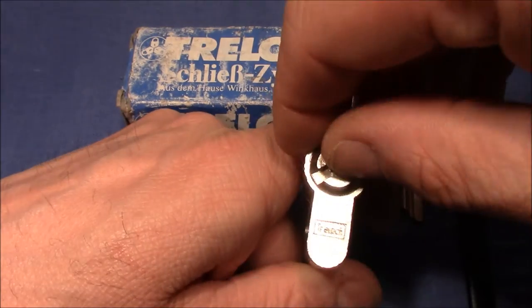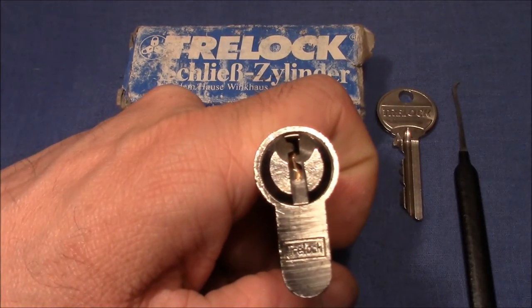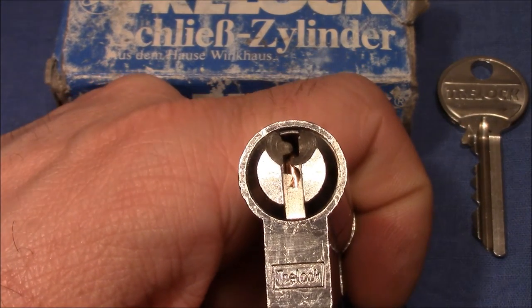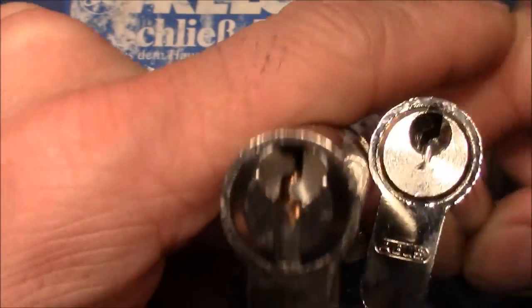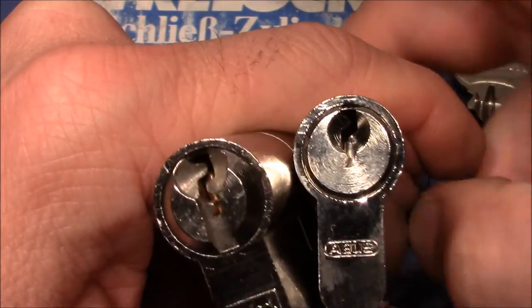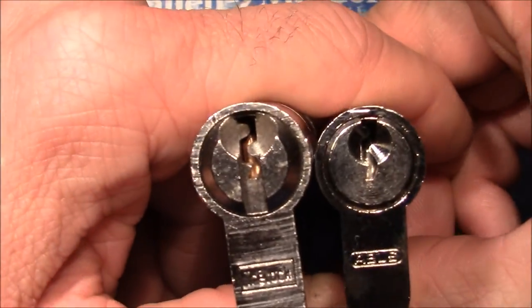So let's lock it back up. That's how the keyway looks like. And I'd like to compare it with a Yale Y1 keyway. You can see it from the Abus.